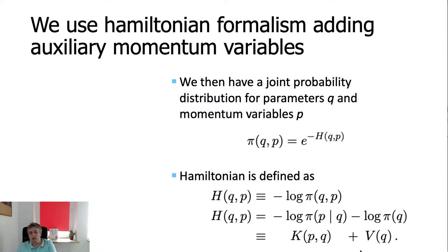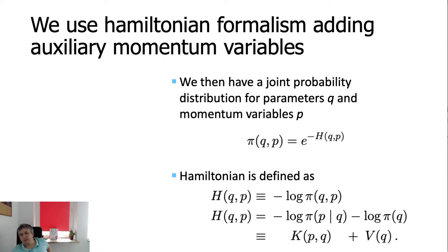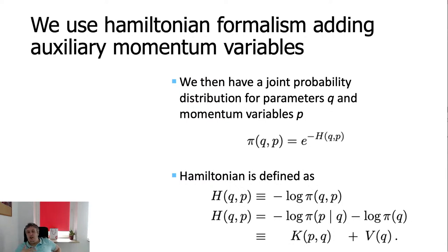Potential energy depends only on the position — in our case, the parameters — and is completely defined by the probability density function we are interested in. It is defined by the curvature equations of the probability distribution we want to solve. So potential energy is known from the problem, from the probability distribution we want to solve. The design choice leaves us with kinetic energy, which we need to define for efficiency.